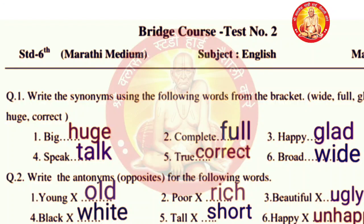I will repeat question number 1 and question number 2 again. Synonyms: big - huge, complete - full, happy - glad, speak - talk, true - correct, broad - wide. Antonyms: young - old, poor - rich, beautiful - ugly, black - white, tall - short, happy - unhappy. Write down all the answers in the notebook.